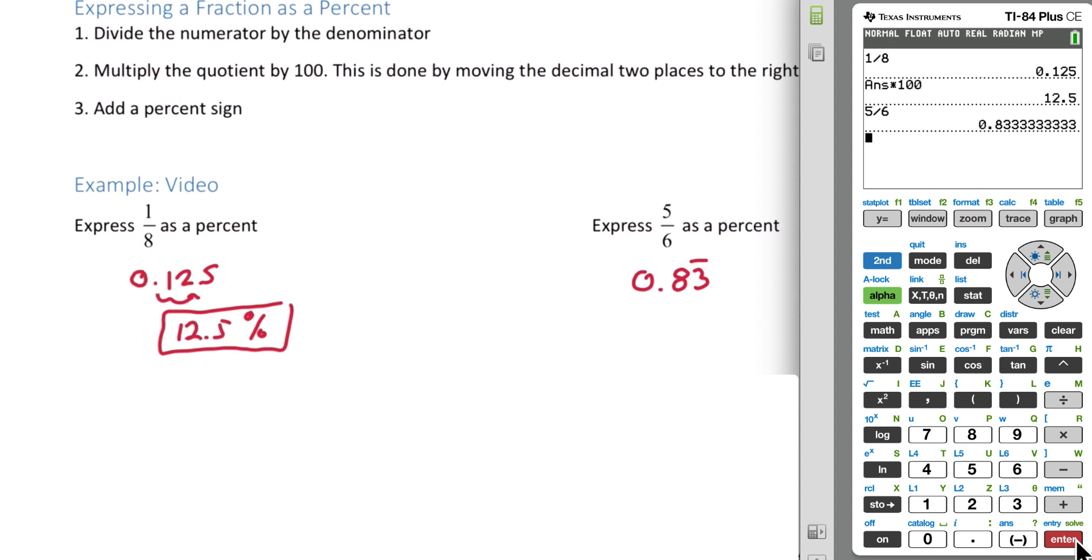To convert this to a percentage, we first multiply by 100, which is essentially going to move the decimal point two times to the right. So we now have 83.3 repeating percent.